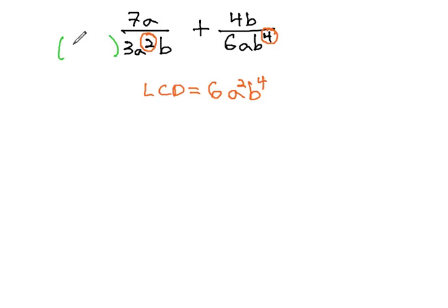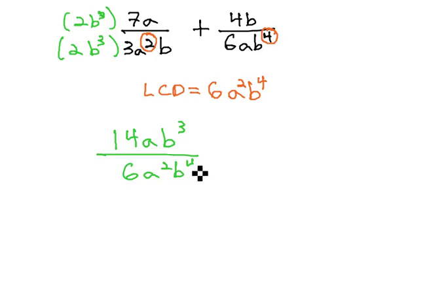The first fraction, the 3, needs to be multiplied by 2 to give us the 6. We already have a squared, but we need 3 more b's, or b cubed. We are multiplying by 2b cubed in both the numerator and denominator, which will give us 14ab cubed over the LCD of 6a squared b to the fourth.